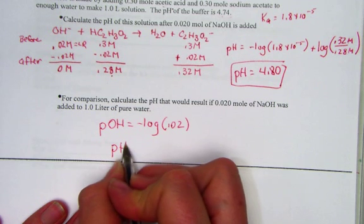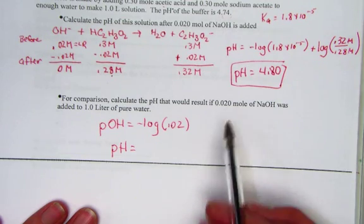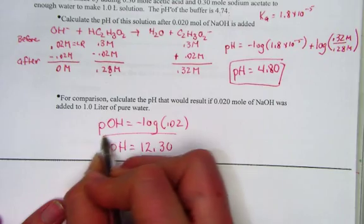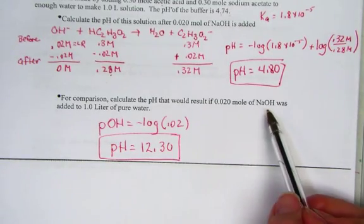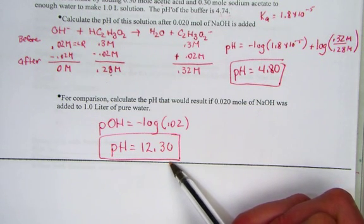And we can flip that to find the pH of our solution by taking 14 minus the pOH. This gives us 12.30. Had sodium hydroxide been added to pure water, we'd expect a pH of 12.3.